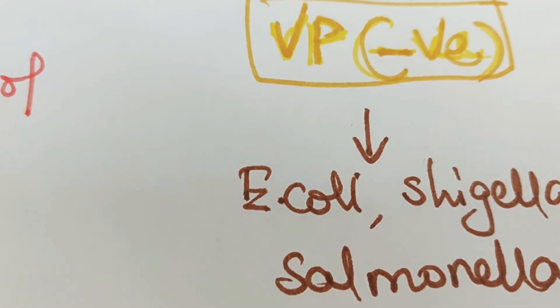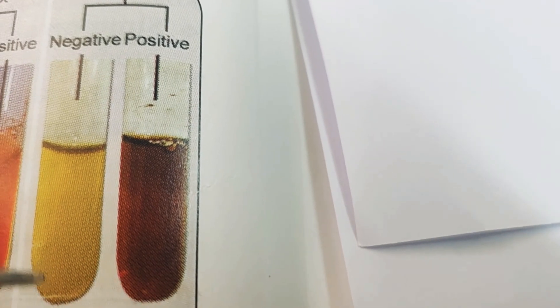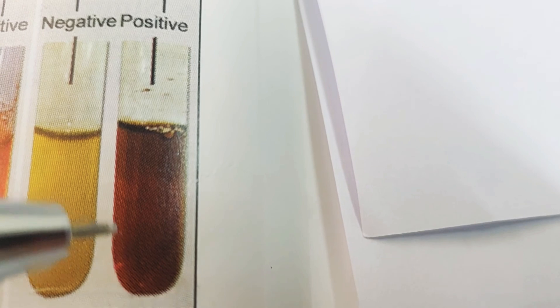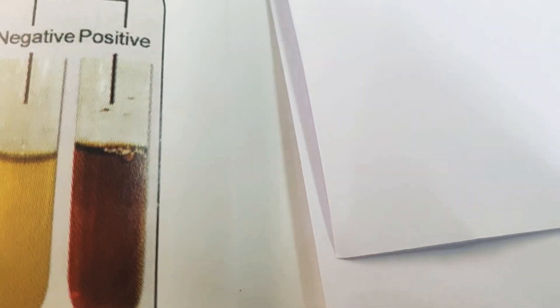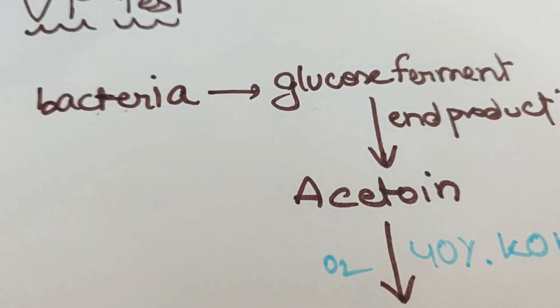Salmonella, etc. You can see this is the diagram - this is the VP test. The negative is almost yellow in color, whereas positive is dark red appearance. This VP test is generally made in glucose phosphate broth.